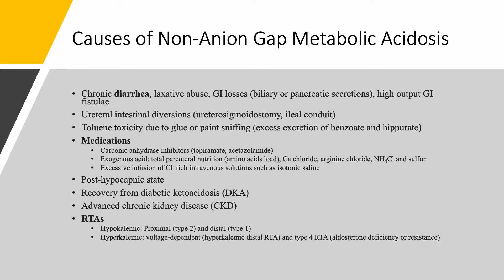Medications, like we said: carbonic anhydrase inhibitors — topiramate and acetazolamide — and total parenteral nutrition solutions, because you're giving a lot of amino acids. Other causes not very common: calcium chloride administration, arginine chloride, ammonium chloride, and sulfur. If you give saline, due to dilution, you can have non-anion gap metabolic acidosis due to these chloride-rich solutions, but the amount of infusion has to be excessive.